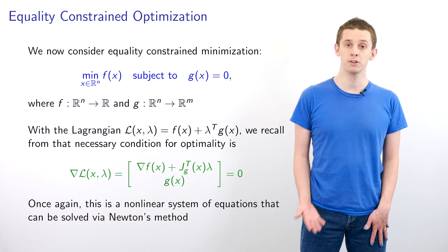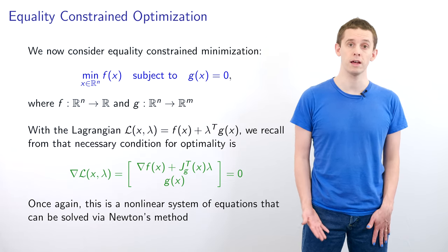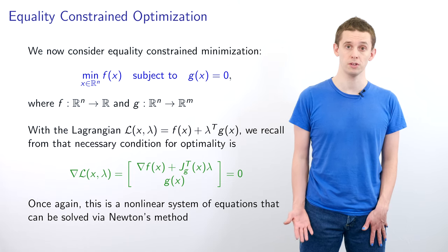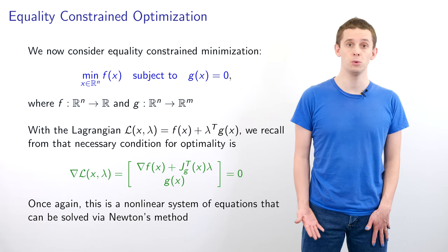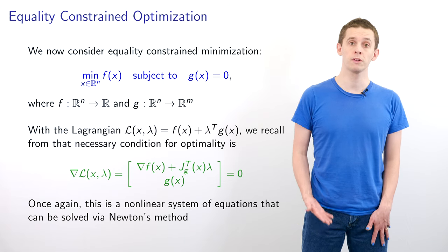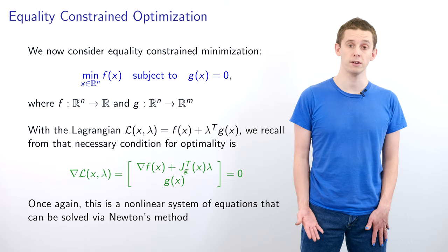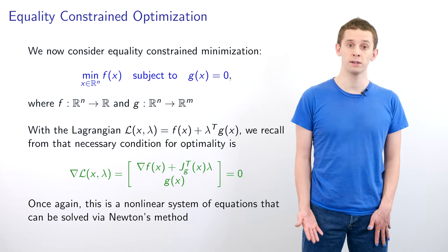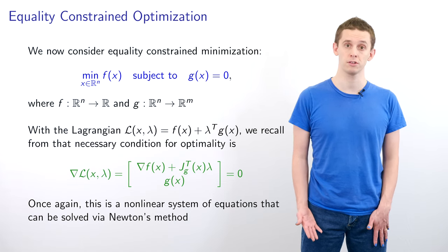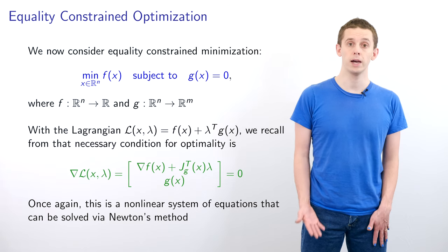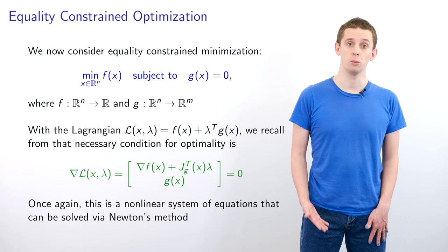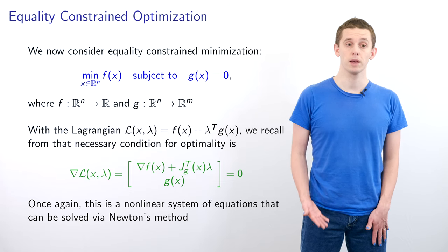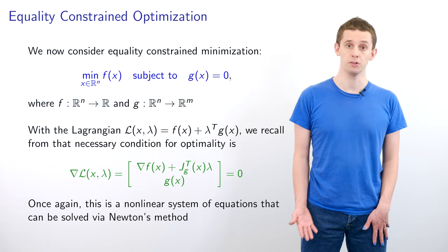A necessary condition for optimality is that the gradient of L equals 0. We can break this gradient down into two parts. If we look at the gradient of L with respect to x, we have ∇f(x) + J_g^T(x)λ. If we look at the gradient of L with respect to λ, we get g(x). To solve this problem we would have to have both of these components equal to 0.